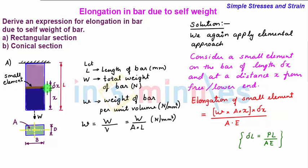So the length of this small element is equal to delta x and the load P is equal to the weight of the bar below the small element whose value is small w into A into x. Now we see that this A term gets cancelled.